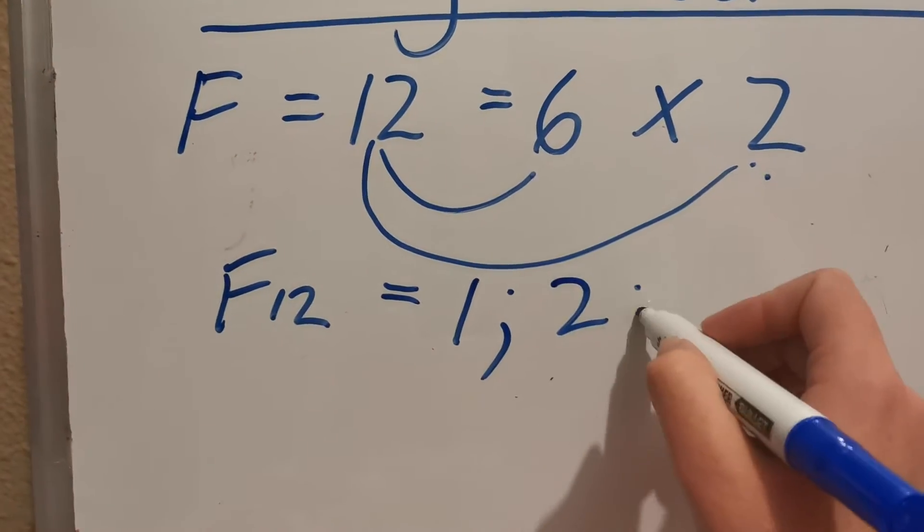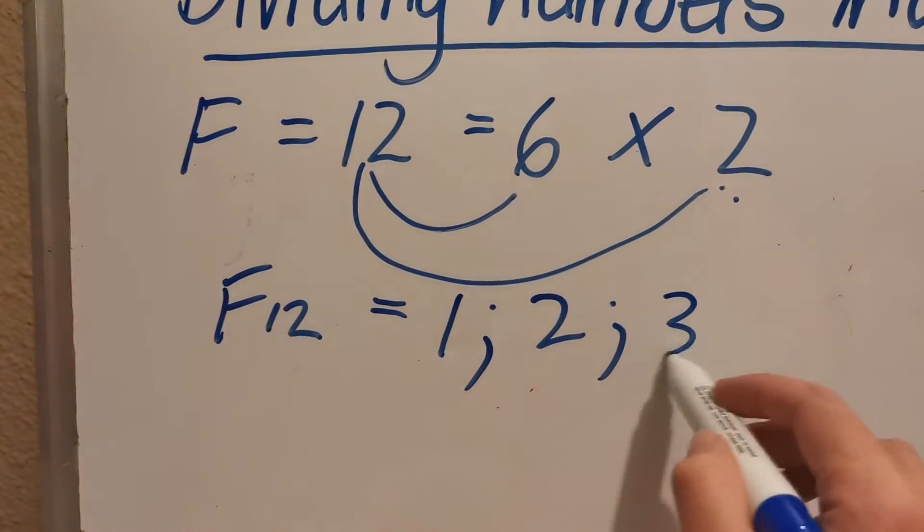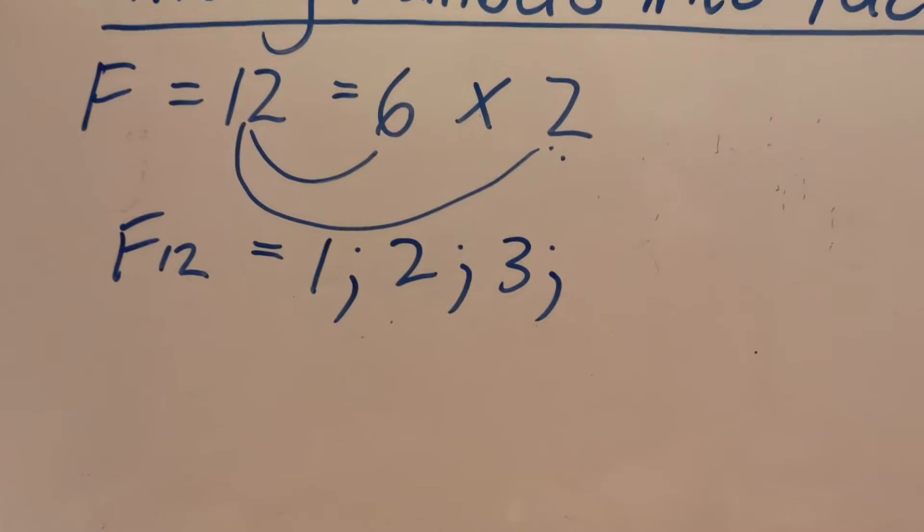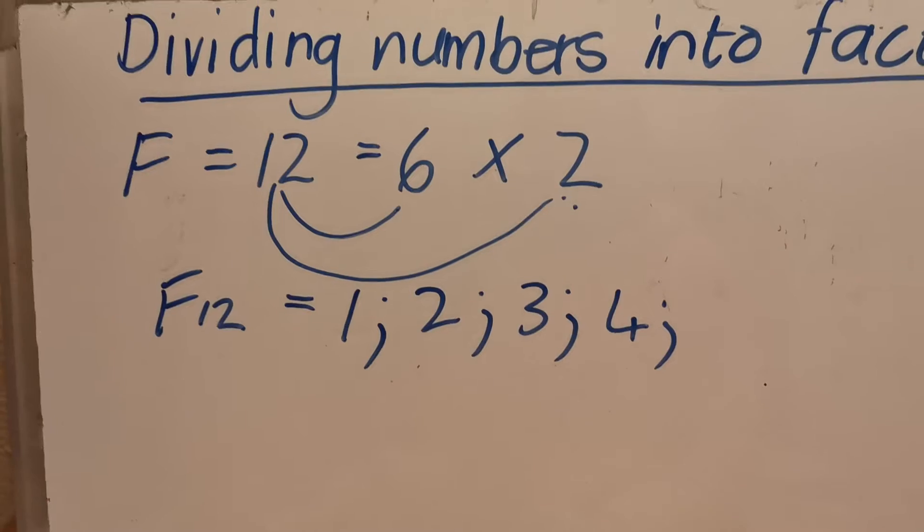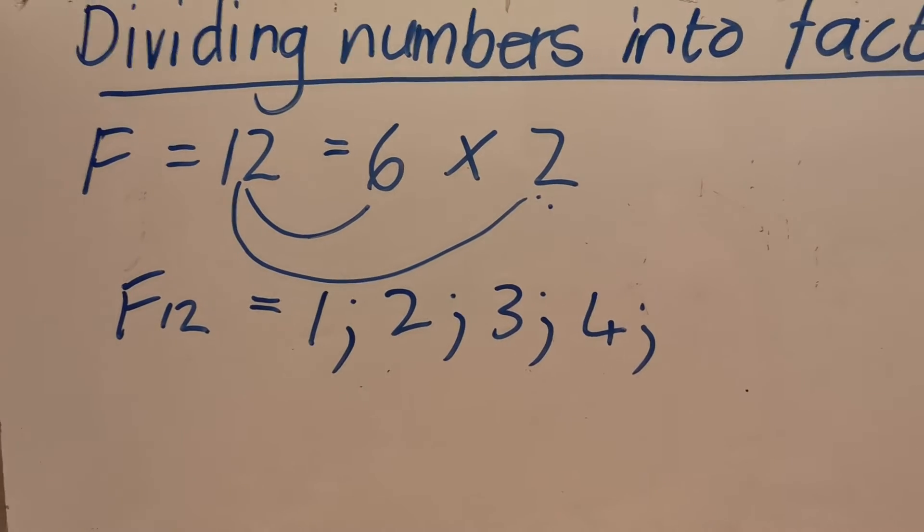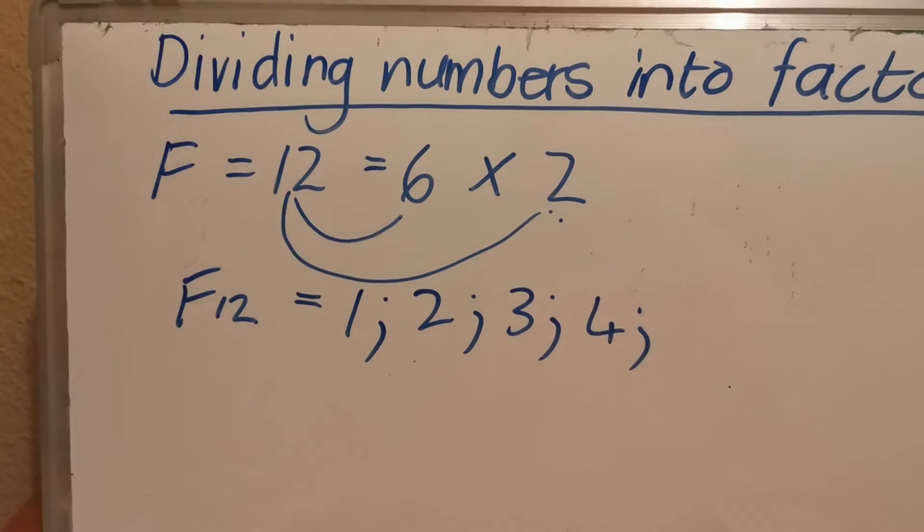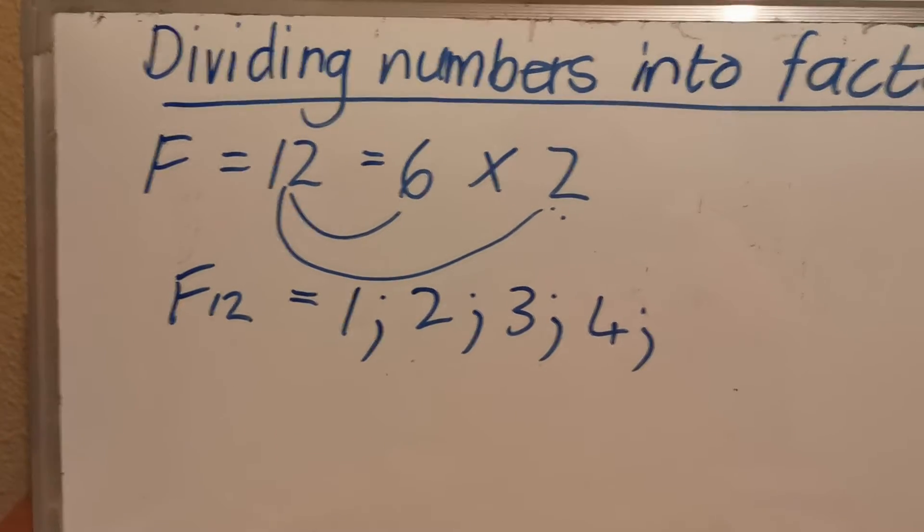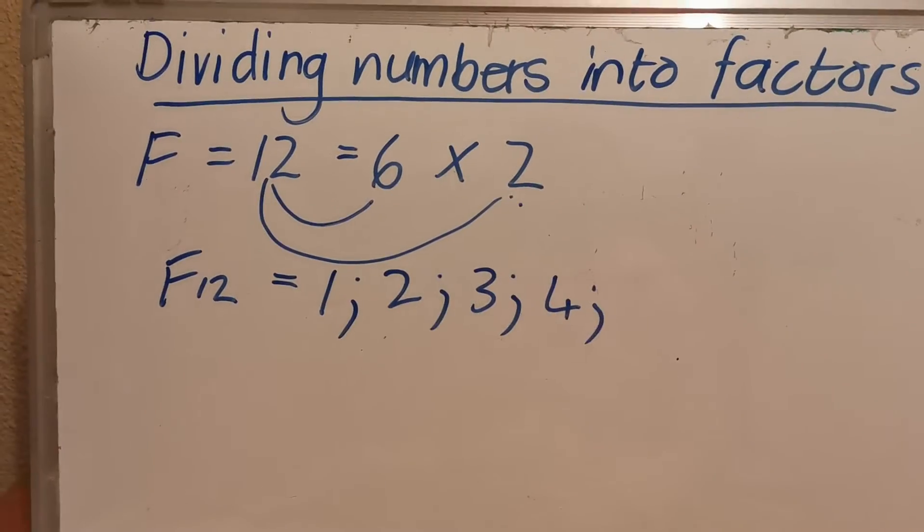2 because 12 divided by 2 will give you 6. 3 because 12 divided by 3 will give you 4. 4 because 12 divided by 4 will give you 5. No, 5 because you can't say 12 divided by 5. 12 divided by 5 will be 2 remainder 2 and a factor cannot have a remainder.